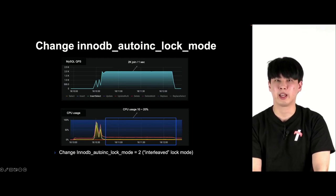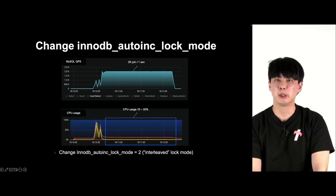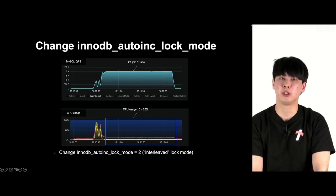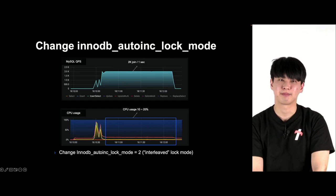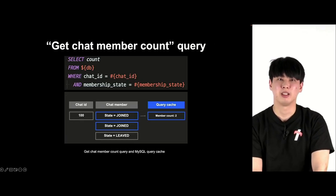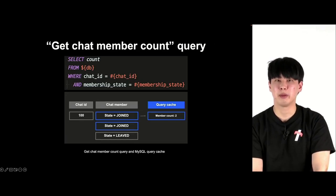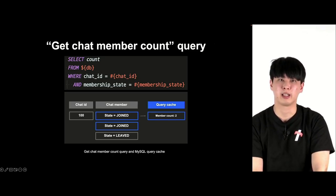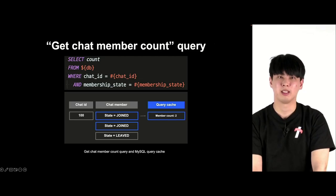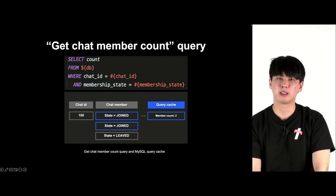So in MySQL, if there are several thousands of join requests in one open chat per second, the CPU usage was maintained at 10 to 20% and was able to handle the requests. There was also the get chat member count query, which created another bottleneck.